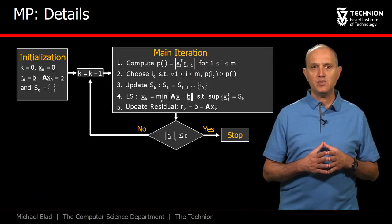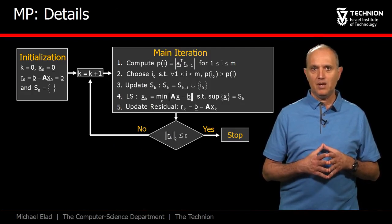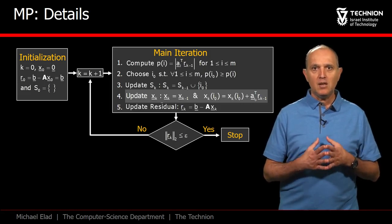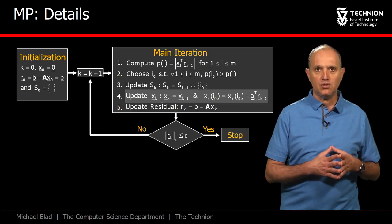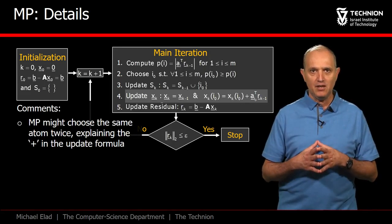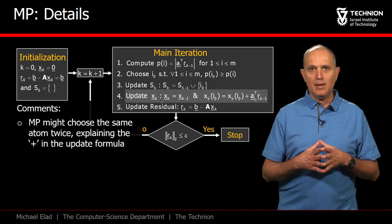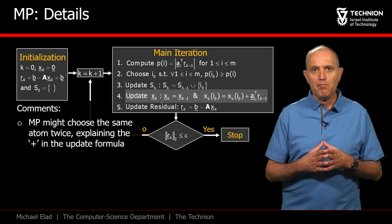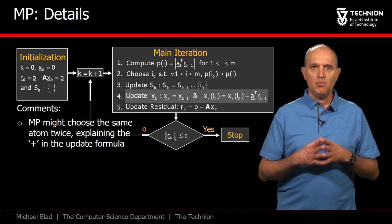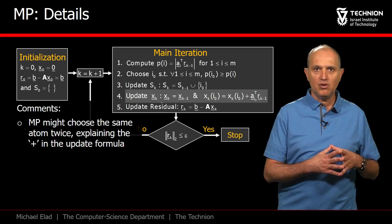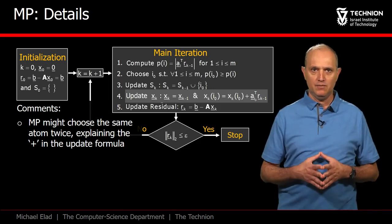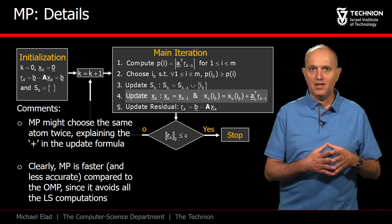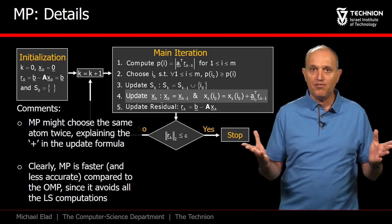Here is the full description of the algorithm. This is the OMP, and with this change, we turn to the Matching Pursuit. This step says: keep the previous solution and update only the coefficient of the newly added atom. Strangely, the update of the new coefficient is described as an addition — because, as opposed to the OMP, MP might choose the same atom several times, and when this is the case, the existing coefficient is simply augmented with the new value. Obviously, MP is faster than OMP, and with this benefit comes the fact that its solution is likely to be inferior in accuracy.